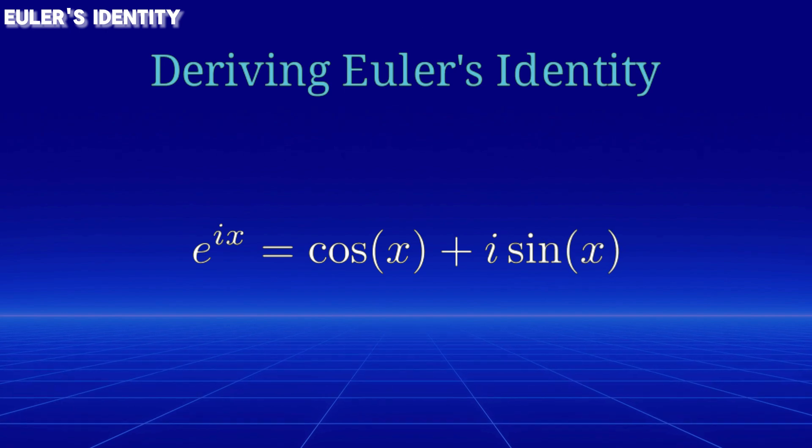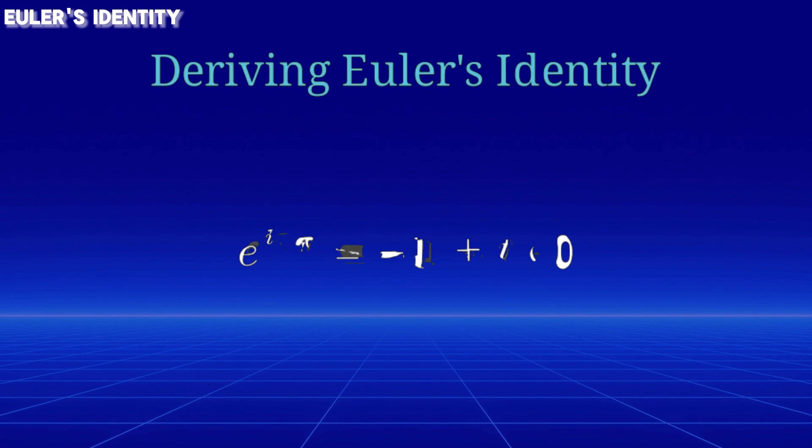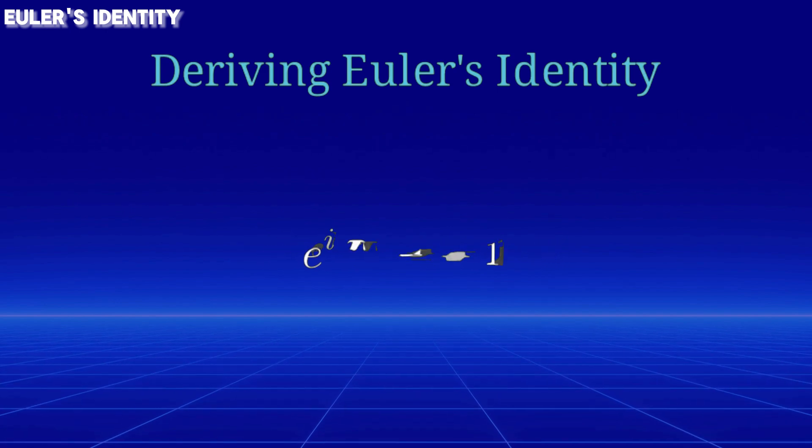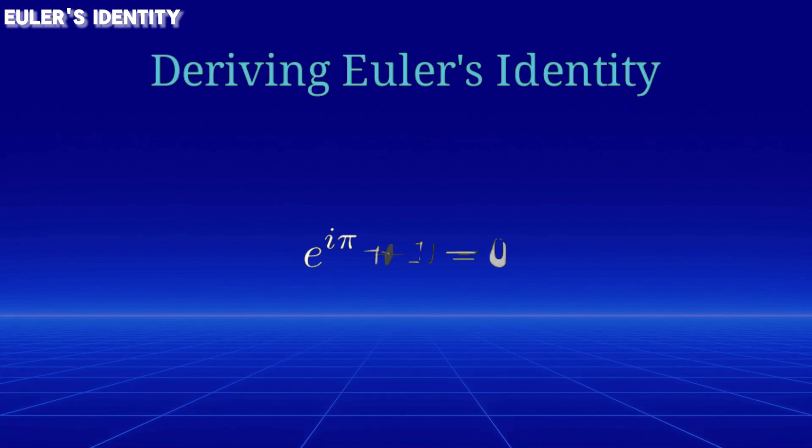Since we know that cosine pi equals negative 1 and sine pi equals 0, this simplifies accordingly. Adding 1 to both sides gives us Euler's identity.